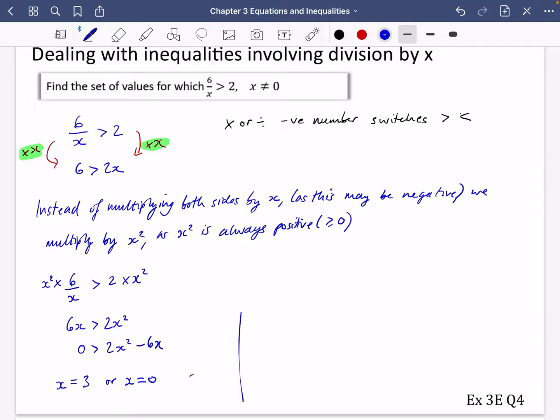I'll then do my quick sketch. So I have 0 and 3. And I remember everything going upwards is greater than 0, everything below that line is less than 0. And I want it to be less than 0, so the part of the graph that I'm interested in is this bit underneath. And so the values are between 0 and 3.